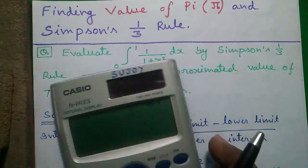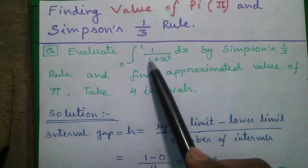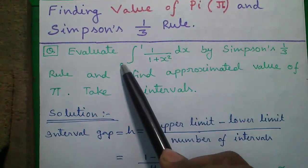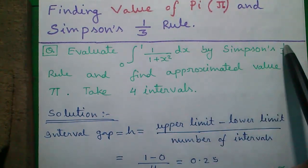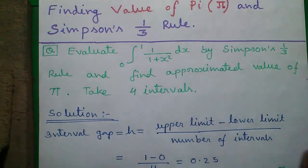So let's start. Here is our question: evaluate 1 divided by 1 plus x square dx with upper limit 1 and lower limit 0 by Simpson's one-third rule and find the approximated value of pi. Take 4 intervals.